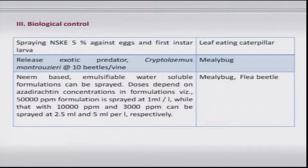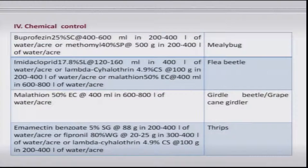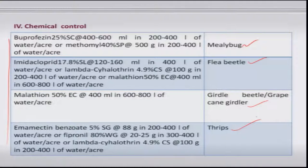For biological control, especially for mealybug, Cryptolaemus montrouzieri — a ladybird beetle — has been recommended at the rate of 10 beetles per vine, which effectively takes care of soft-bodied insects. Apart from that, neem-based insecticides like NSKE 5 percent or commercial neem can be used against the majority of pests. Recommended chemicals against various pests should be employed based on the economic threshold value.